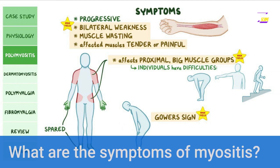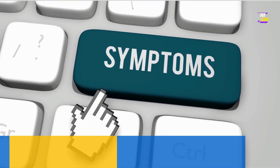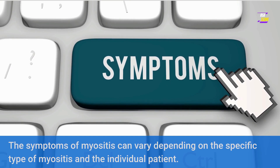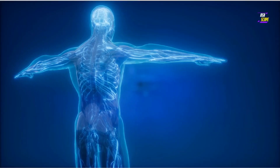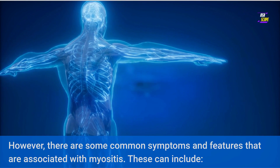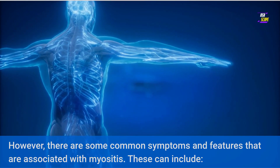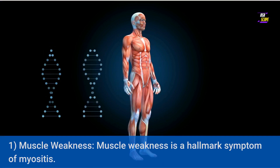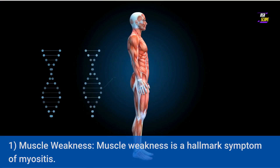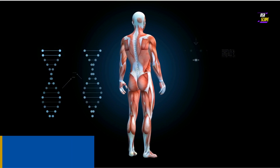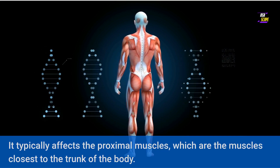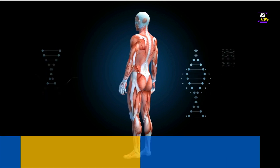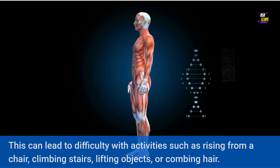The symptoms of myositis can vary depending on the specific type and the individual patient. However, common symptoms include: 1. Muscle Weakness — muscle weakness is a hallmark symptom of myositis. It typically affects the proximal muscles, which are the muscles closest to the trunk of the body. This can lead to difficulty with activities such as rising from a chair, climbing stairs, lifting objects, or combing hair.